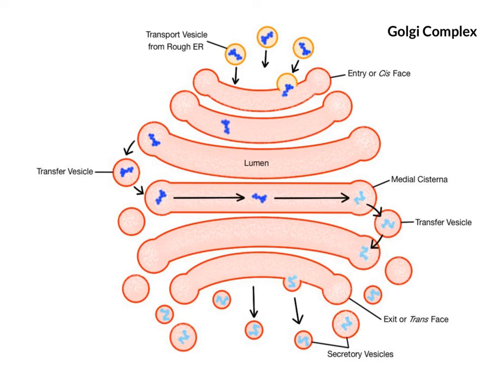They then send the protein out of the Golgi through the exit face or trans face. Trans means across. The Golgi packages the protein into a secretory vesicle, which usually exports the protein out of the cell through exocytosis.